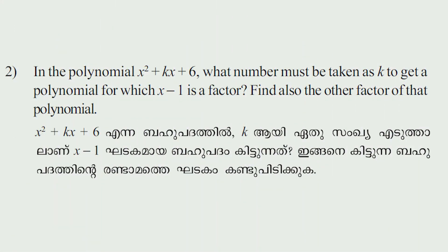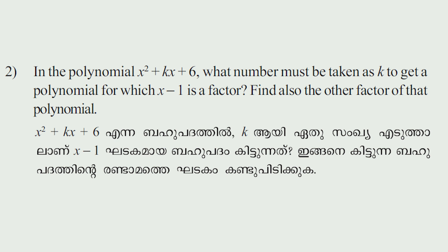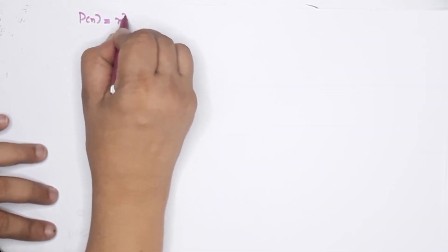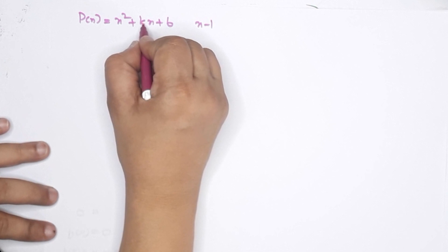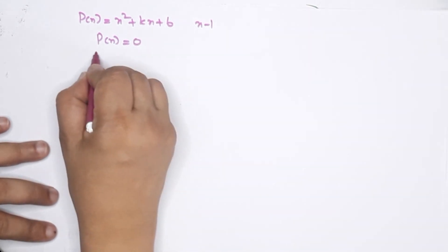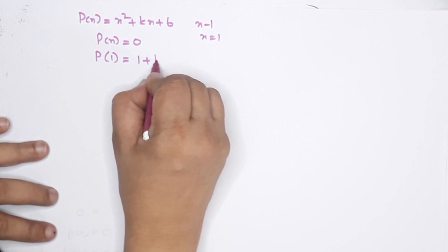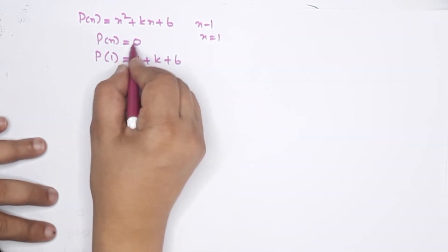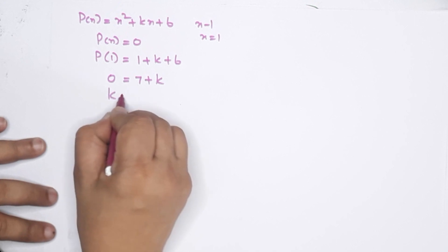Second question: in the polynomial x squared plus kx plus 6, what number must be taken as k to get a polynomial for which x minus 1 is a factor? Since x minus 1 is a factor, P of 1 equals 0. Substituting x equals 1: 1 plus k plus 6 equals 0, that is 7 plus k equals 0, so k is equal to minus 7.